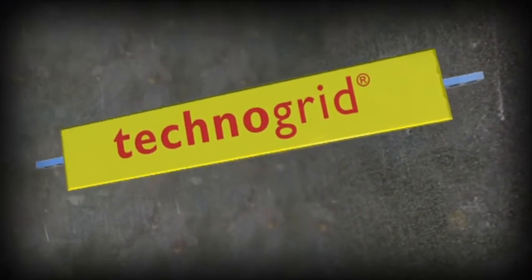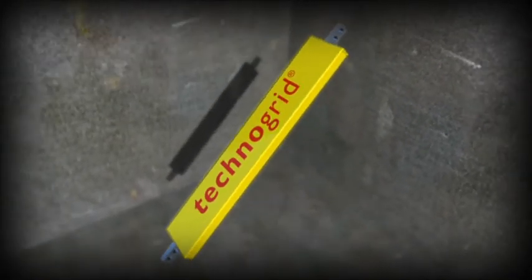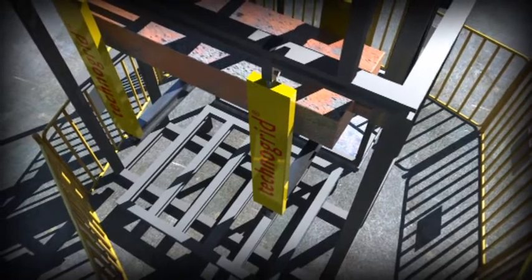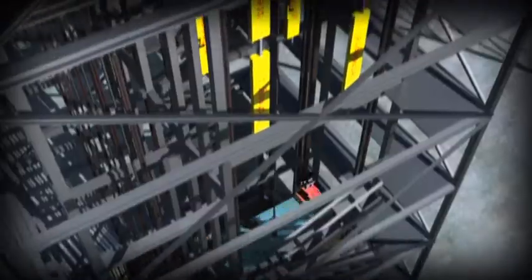This is Technogrid, the technologically advanced impact energy absorption device from the Horn Group. It controls dangerous impacts through predictable kinetic energy absorption, allowing the safe deceleration of large masses.